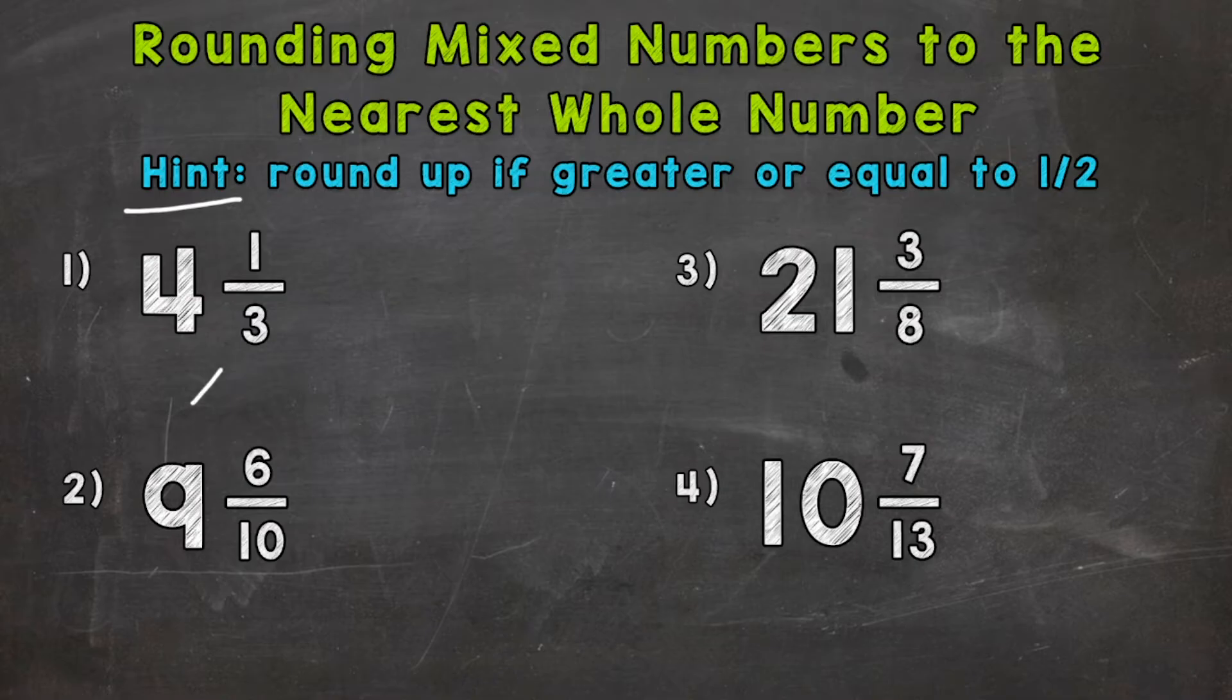So let's take a look at the fractional part one third. So half of three is one and a half. So this is going to be less than a half because we only have one for our numerator there. It's less than that one and a half, which is half of three. So we stay the same. Our closest whole number is four. So four and one third rounds to four.